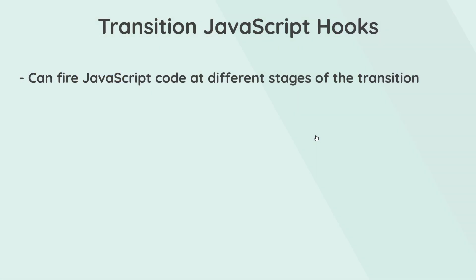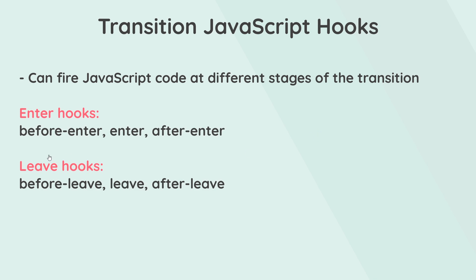So far we've just been using CSS classes to control our animations, but the transition component also exposes a number of JavaScript hooks that we can use to fire JavaScript code at different stages of the animation. The hooks are split into two groups: the enter hooks — before-enter, enter, and after-enter — and the leave hooks — before-leave, leave, and after-leave.